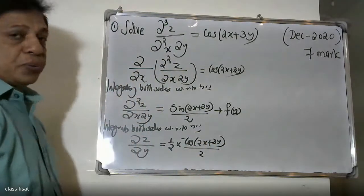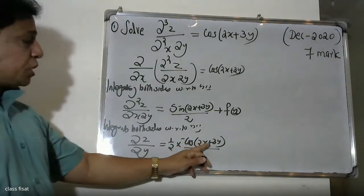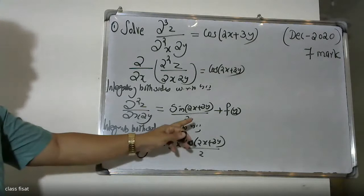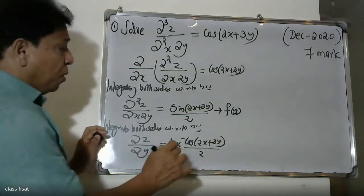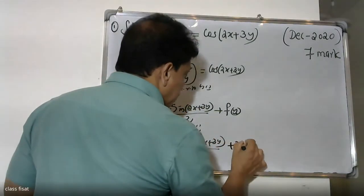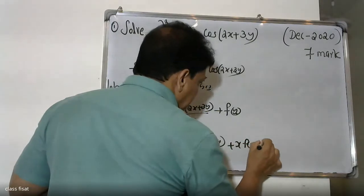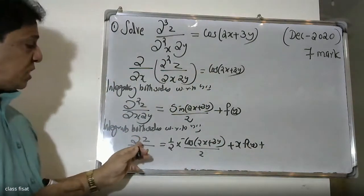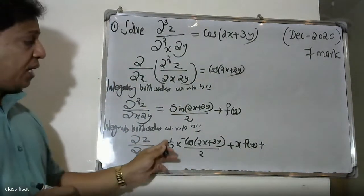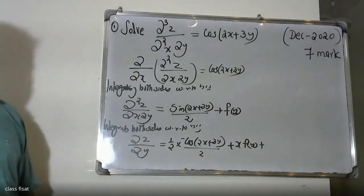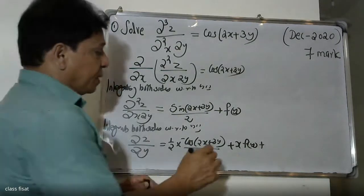So we get minus 1 by 4 cos(2x + 3y). If we take the f(y) term, integrating x·f(y) gives x·f(y). This is the constant with variable y. Therefore, r will be a function of y.